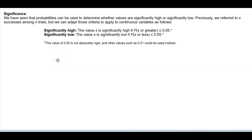Significance. We have seen that probabilities can be used to determine whether values are significantly high or significantly low. Previously we referred to X successes among N trials, but we can adapt those criteria to apply to continuous variables as follows.